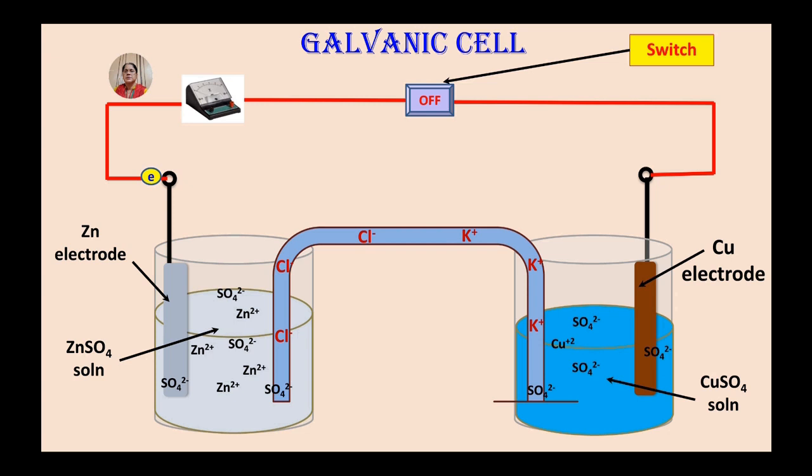Now when the circuit is completed by inserting the key in the switch key, it is observed that current starts flowing through the external circuit which is indicated by the ammeter, and the zinc rod gradually loses its weight as zinc atoms oxidize into Zn plus two ions and lose two electrons.